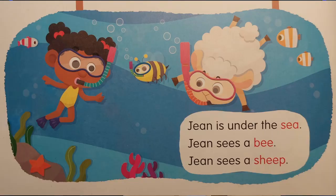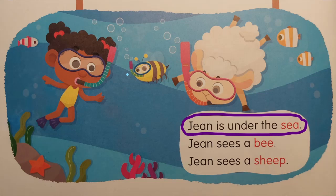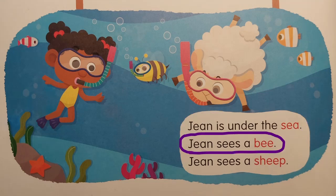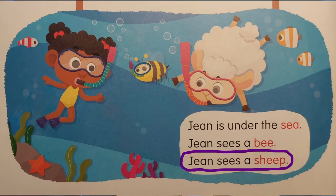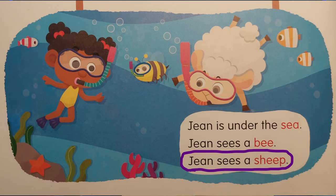Now the second picture. Gene is under the sea — she's swimming, snorkeling, with some goggles. You see a sheep and a bee swimming in the sea too, and you can see some fish. Let's read the sentences: Gene is under the sea. Gene sees a bee. Gene sees a sheep.